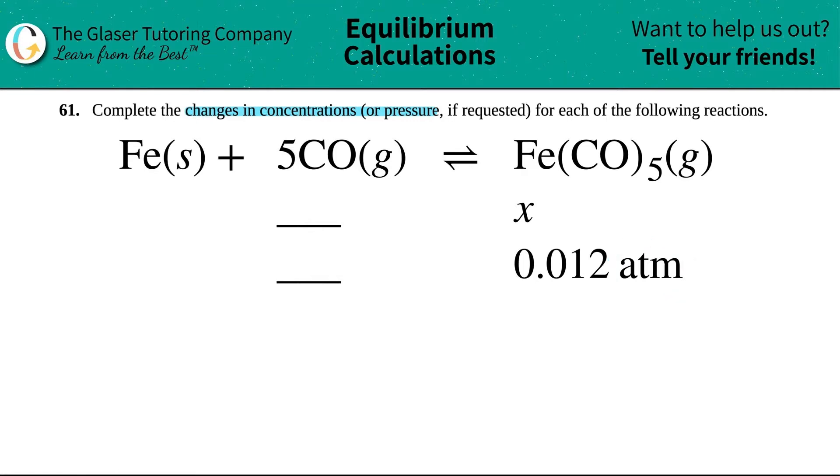So now how are we going to find out what the change is? Well, it starts with what we're given. Now the Fe(CO)₅ increased by a factor of x. Now I say that it's increased because it's a positive x value. They didn't say that this was a negative, so positive means increasing.